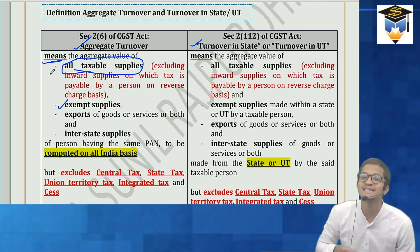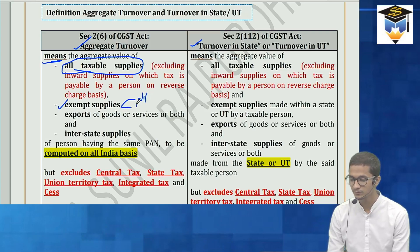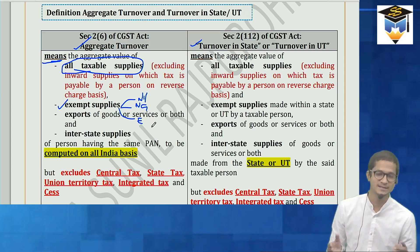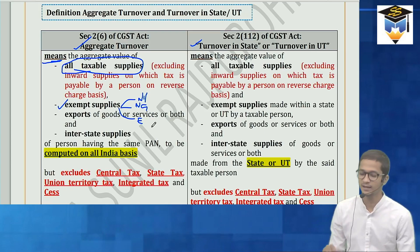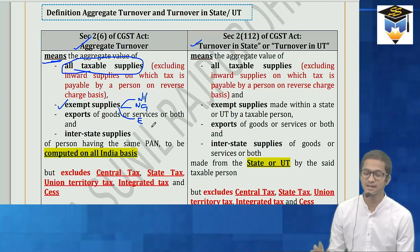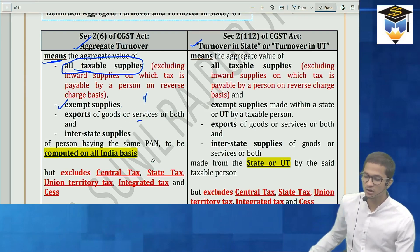Exempt supply includes your nil-rated supplies, your non-GST supplies — basically petroleum products (5 petro products) and alcoholic liquor — and exempt supplies meaning those exempted under exemption notifications like notification 12/2017 for services. Even those will form part of your aggregate turnover.